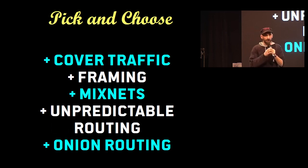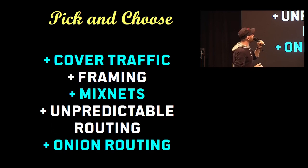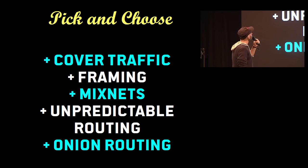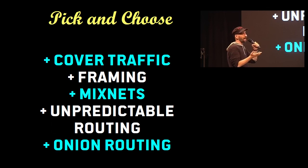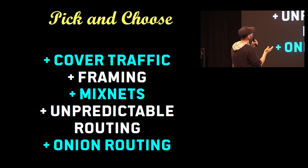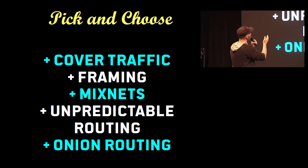We actually have a choice of tools to protect anonymity, to protect metadata, and to protect content. In order to achieve certain goals, we can sometimes, for reasons of practicality, leave something out. On a mobile phone, maybe we don't want to do cover traffic all the time — but as long as we're doing framing, onion routing, and mix nets, that's pretty good.